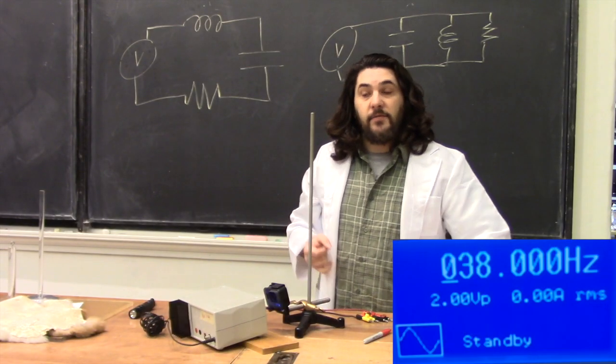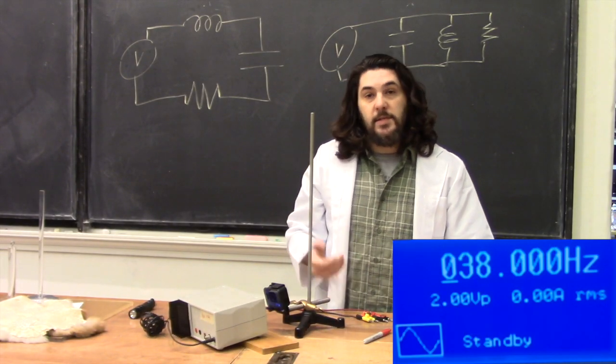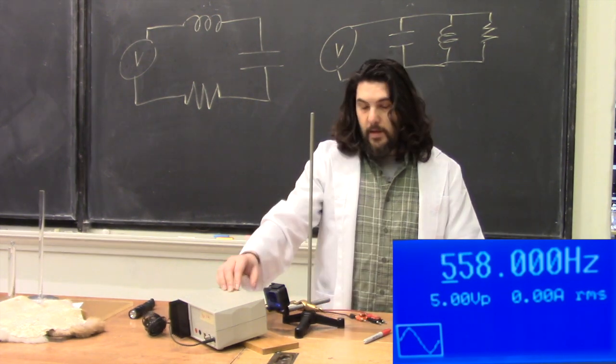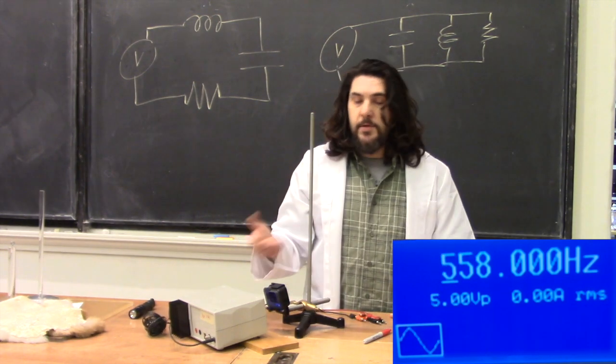The signal generator itself is kind enough to give us a frequency, voltage amplitude, and current RMS reading. Here we can see at low frequency, we are receiving no current.